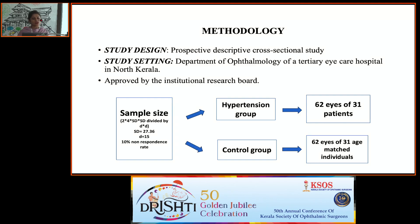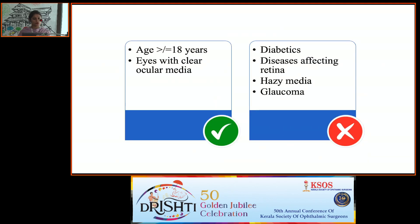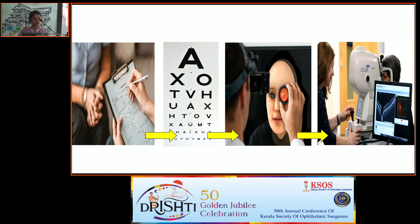We conducted a prospective descriptive cross-sectional study in patients coming to the retina clinic. Sample size was 31 — we studied 62 eyes of 31 patients each in the hypertensive and control groups. We included patients aged 18 years or more with clear ocular media, and excluded those with diabetes, diseases affecting the retina, hazy media, and glaucoma.